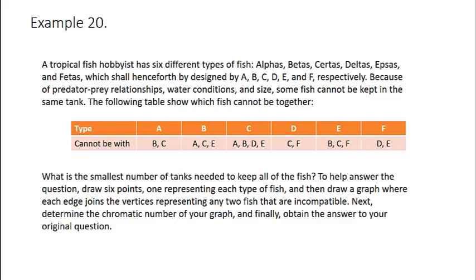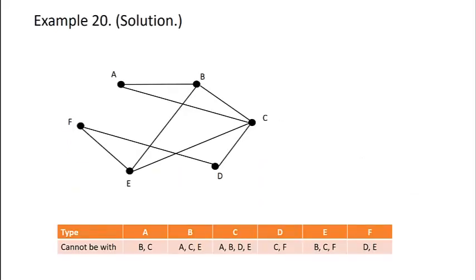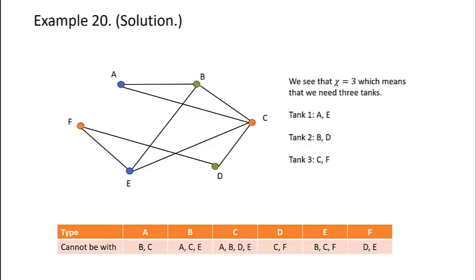Okay. Here is a possible graph that you could draw representing the information in the table. And now a valid coloring would be this one. We see that the chromatic number of the graph is three, which means that we're going to need three tanks. In the coloring I've given, in tank one would be our blue vertices, so fish A and E would be kept together. In tank two would be fish B and D. In tank three, fish C and F. Note that this is not the only solution. This is just a solution, but you should be able to end up with a chromatic number of three.